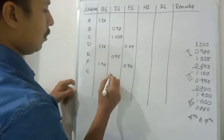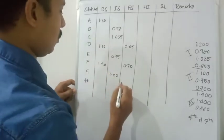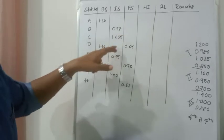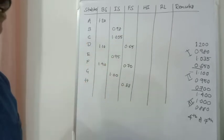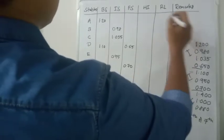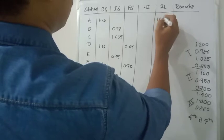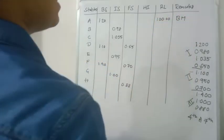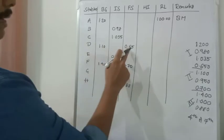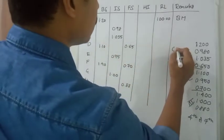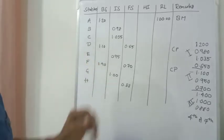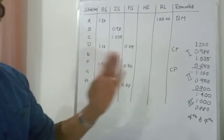Back sight 1.40 corresponds to station F. The intermediate reading is G = 1.0, and H = 0.88 is the last reading. So there are four intermediate sight readings and three each of back sight and fore sight. This completes the data entry. We also know that station A has a reduced level of 100 meters, so A is the benchmark. The two change points are D and F.